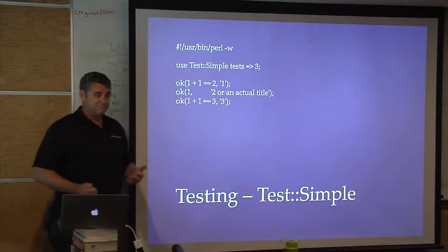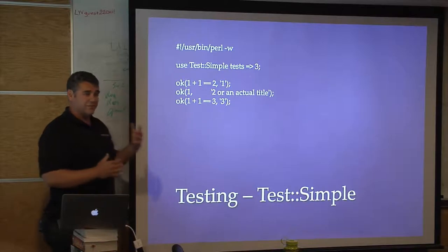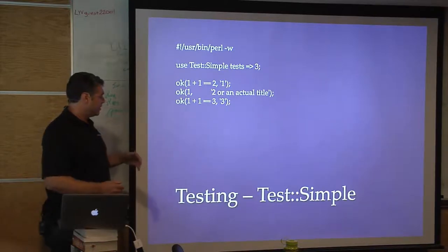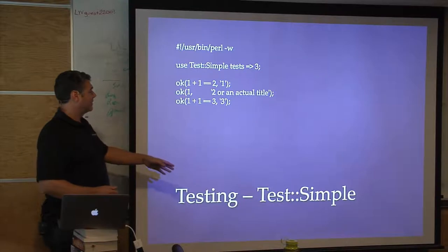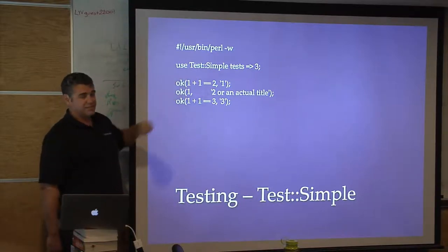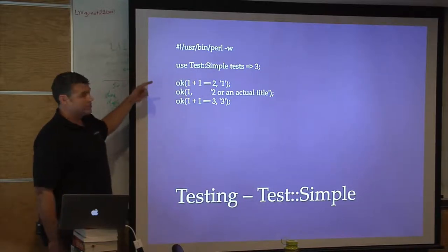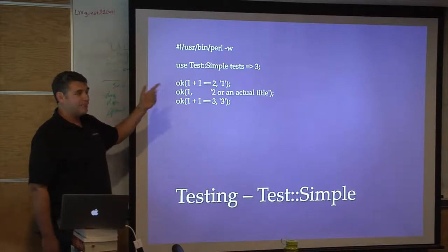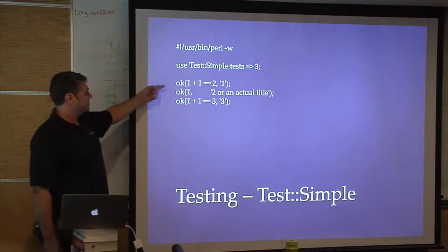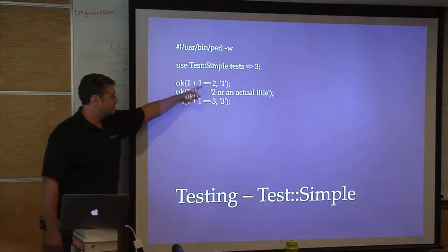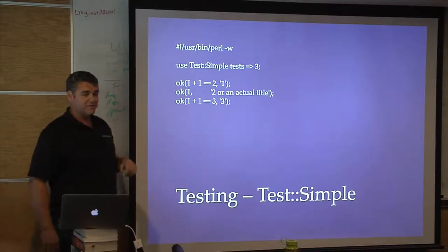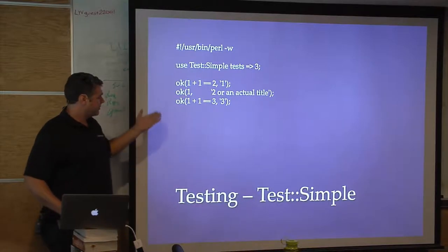That gets painful if every time you have to write all those ifs and nots. So Test::Simple came along and introduced the ok() function. You just use Test::Simple, tell it how many tests you're going to run, then say ok() — is this true? — followed by the name of the test, and so on.